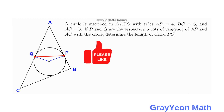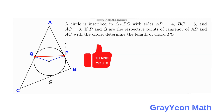Welcome to GrayonMath. We are asked to solve this problem: a circle is inscribed in a triangle with sides AB equal to 4, BC equal to 6, and AC equal to A. If P and Q are respective points of tangency of AB and AC with the circle, determine the length of chord PQ.